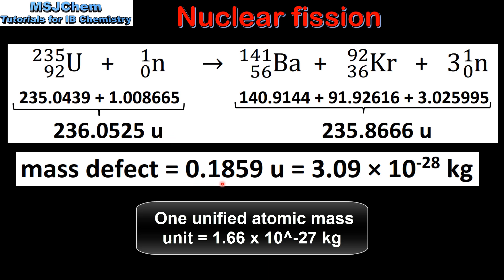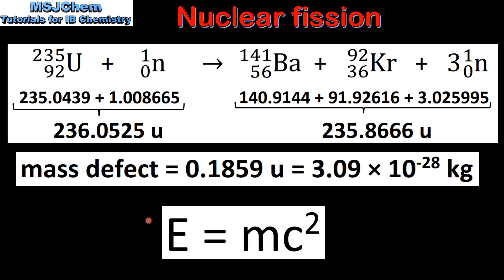If we subtract the mass of the products from the mass of the reactants we get the mass defect, which we can then convert to kilograms.